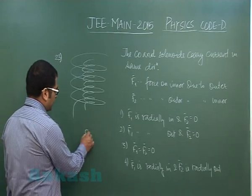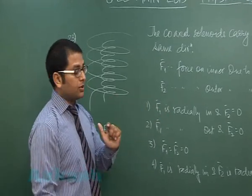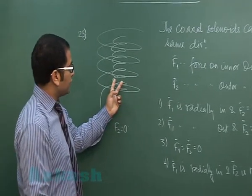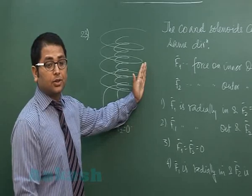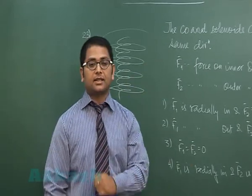First of all, F2 would be 0. That's a very easy conclusion because force on outer due to inner, the field due to inner solenoid would be 0 outside. So if there is no external field, the outer solenoid will experience 0 force.